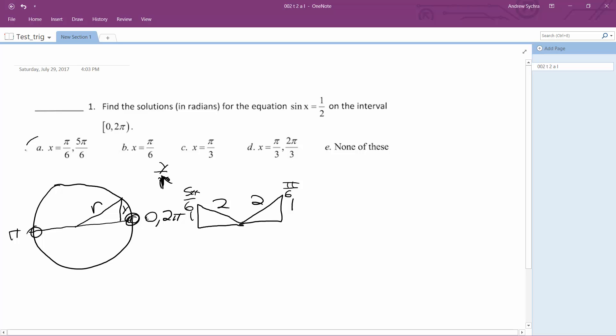So in this instance, A is going to be our solution, so pi over 6 comma 5 pi over 6, and hopefully that makes sense because sine is only 1 half at pi over 6 because it's rise over run,